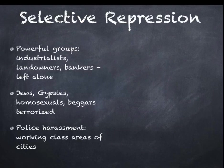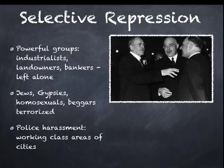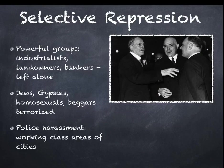Selective repression. Not every group in society was repressed. Some were supporters of Hitler or were important to him in many ways. Powerful groups — the industrialists, landowners and bankers — were left alone. Hitler wanted their support in order to fund his plans to prepare Germany for war and eventually prosecute that war.